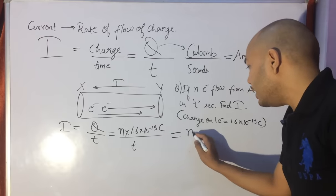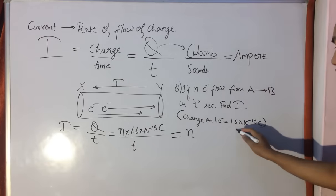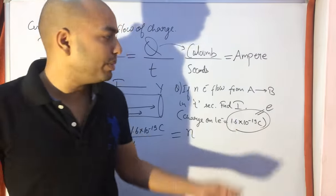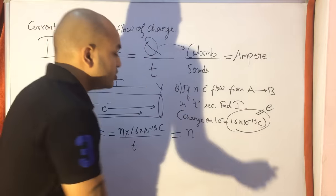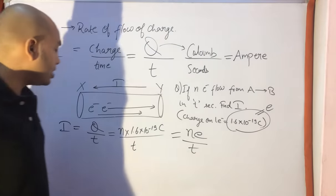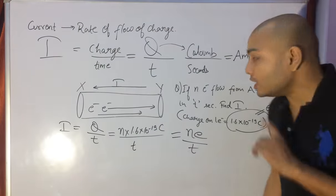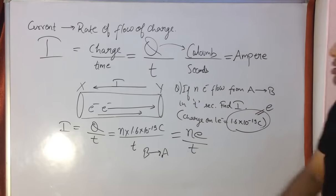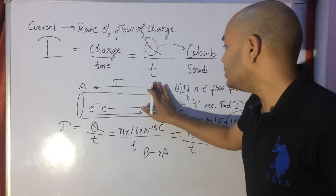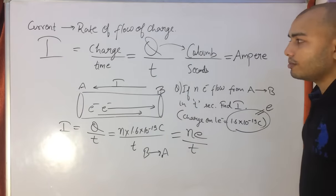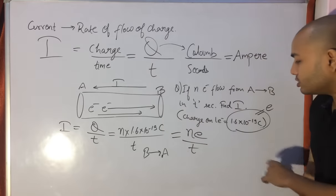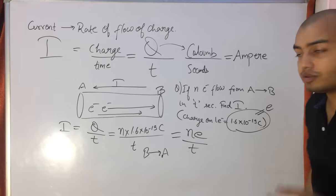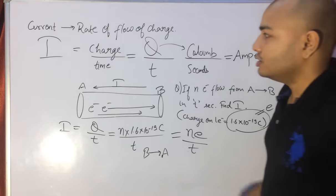We can also write: I = Ne/T, where e = 1.6 × 10⁻¹⁹ coulombs is the charge on one electron, abbreviated as e in physics. So current has another formula: Ne/T. Note that the direction of current will be from B to A, since electrons are flowing from A to B. The charge on two electrons is 2e, three electrons 3e, N electrons Ne — so Ne charge flows per unit time, and that is the current.